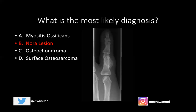A surface osteosarcoma would be very uncommon in the hand — that would be very rare. We also see no aggressive features: no periosteal reaction, no Codman's triangle, no destruction of the underlying bone. So surface osteosarcoma is much less likely.